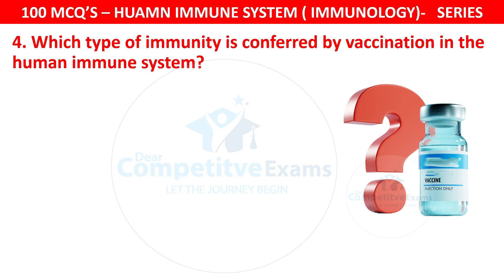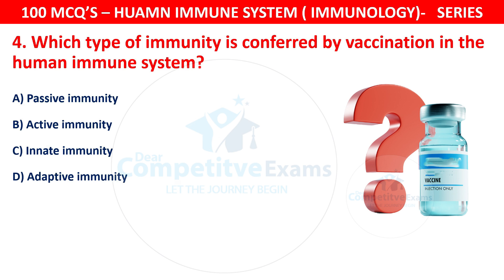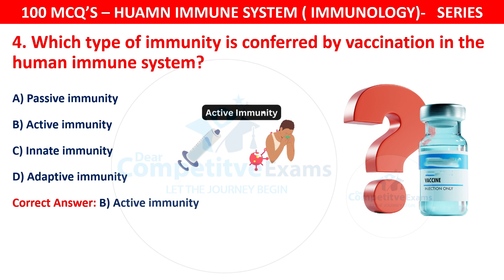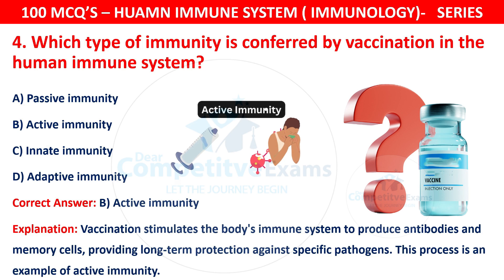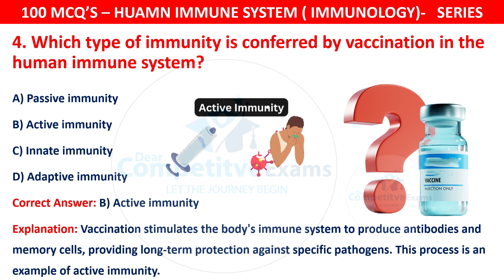Question 4. Which type of immunity is conferred by vaccination in the human immune system? Your options are: passive immunity, active immunity, innate immunity, or adaptive immunity. The correct answer is B — active immunity. Vaccination stimulates the body's immune system to produce antibodies and memory cells, providing long-term protection against specific pathogens. This process is an example of active immunity.